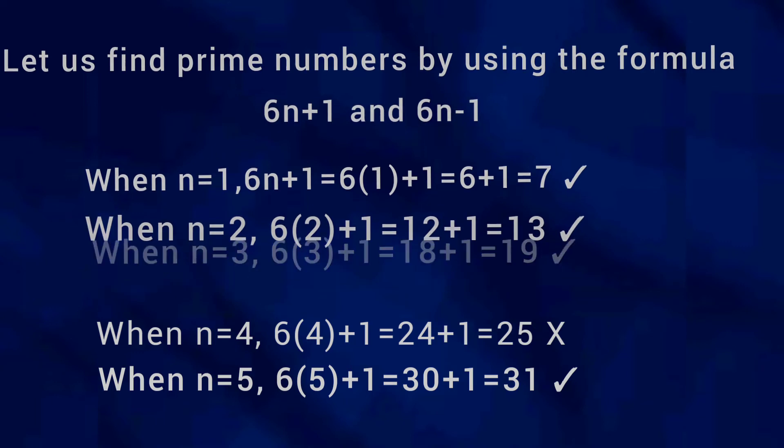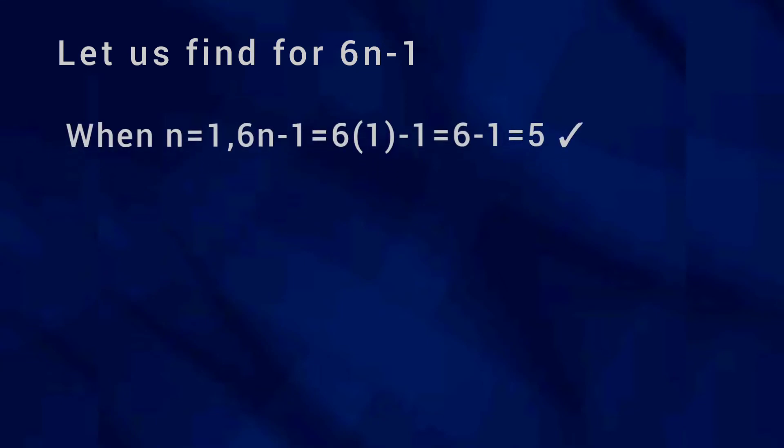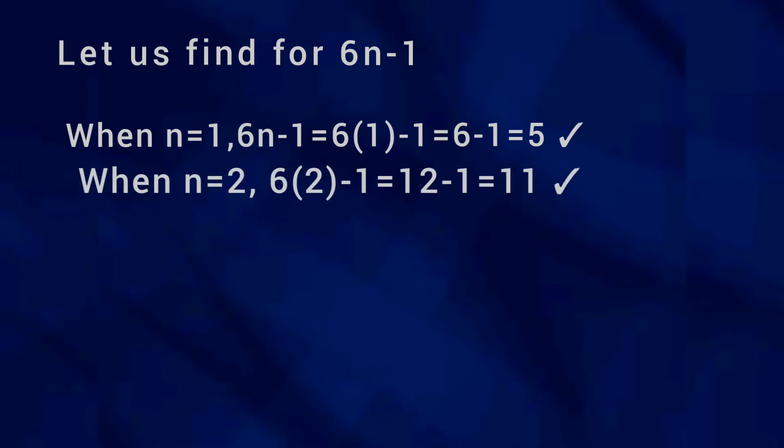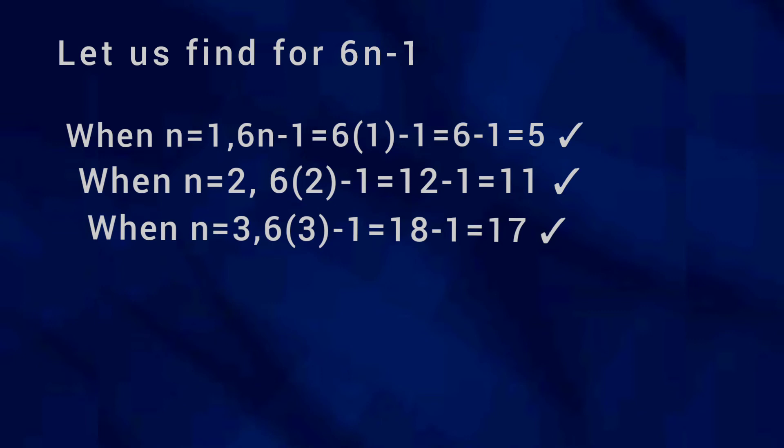Now let us find prime numbers using 6n − 1. When n = 1, 6 × 1 − 1 = 5, and 5 is a prime number. When n = 2, 6 × 2 − 1 = 12 − 1 = 11, and 11 is a prime number. When n = 3, 6 × 3 − 1 = 18 − 1 = 17, and 17 is also a prime number.